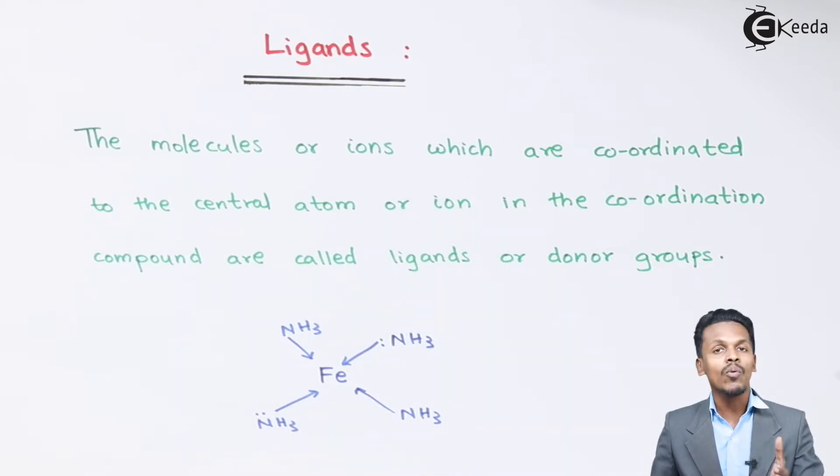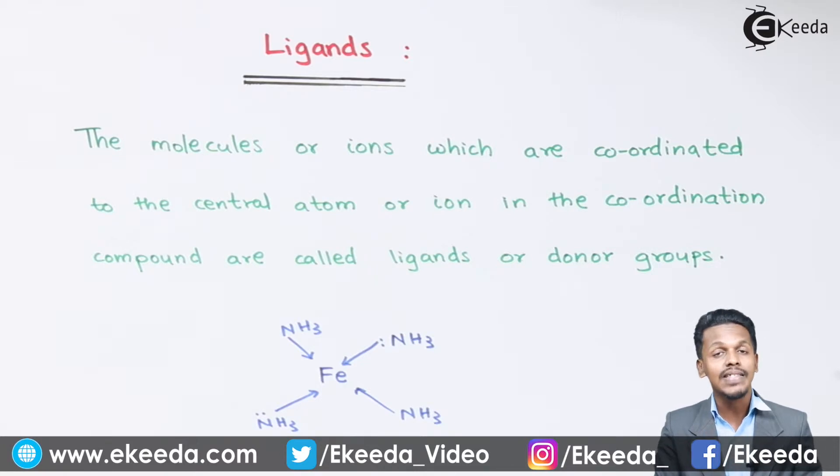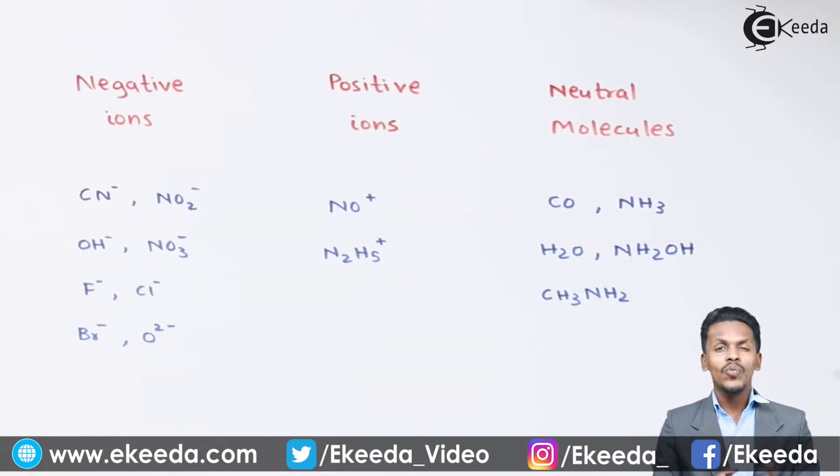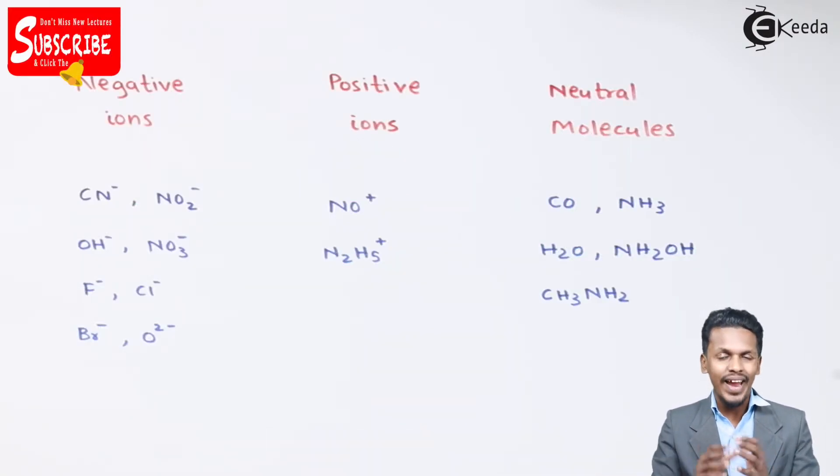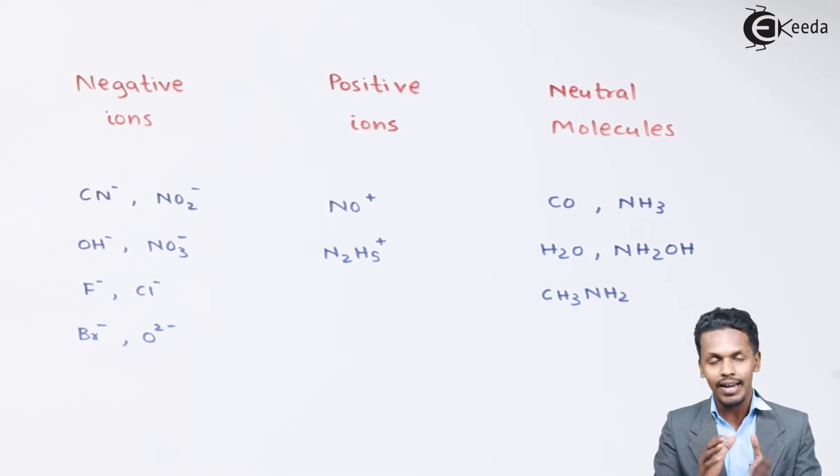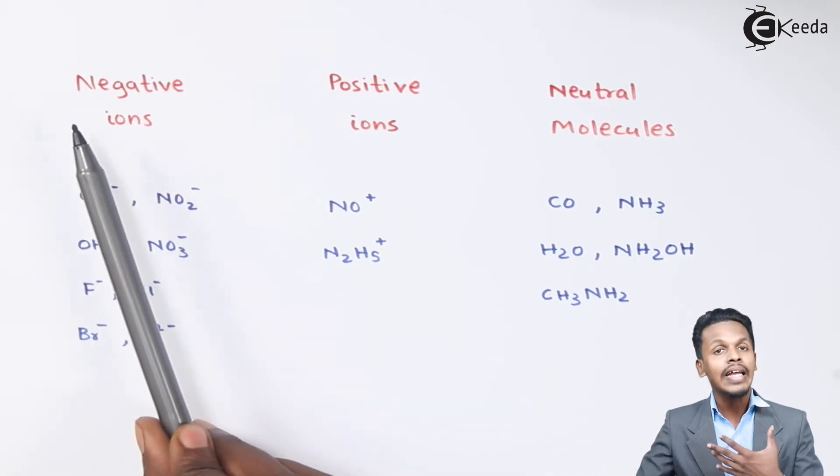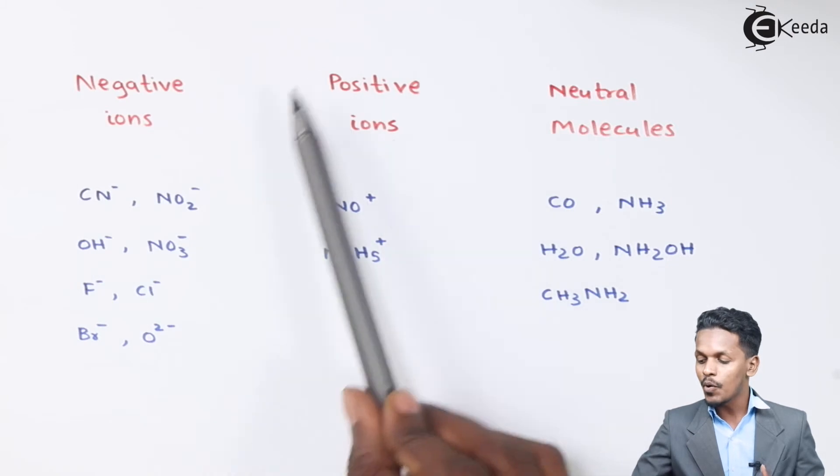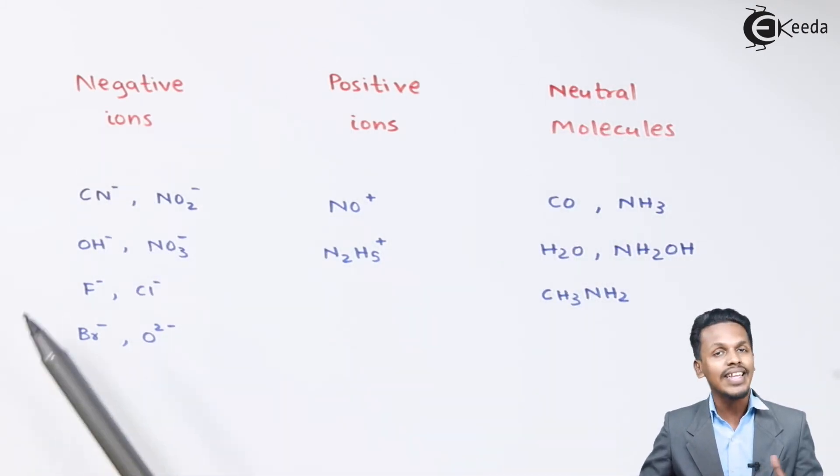So based on that, let us understand what are the different types of ligands and how basically ligands are classified depending on their charge. We understood that ligands are those groups of atoms or those atoms or ions which donate the lone pair of electrons to the central metal atom. In that case they are said to be Lewis base while the central atom is called Lewis acid. The ligands are of various types and based on the classification based on the charge, they are classified into three types: negative ions, positive ions and neutral molecules.